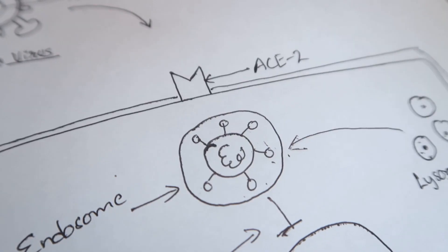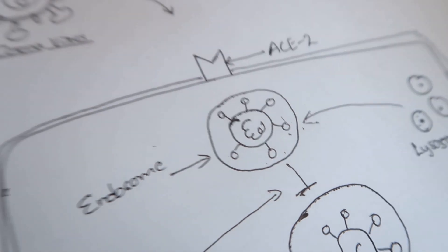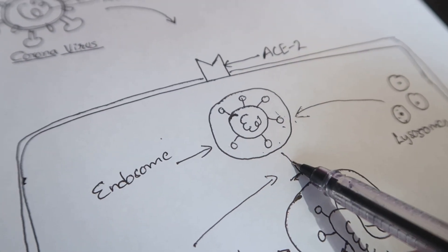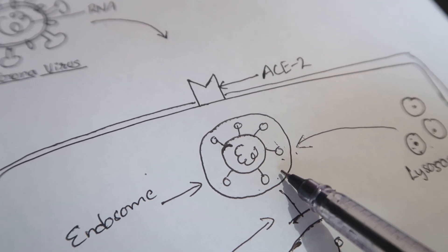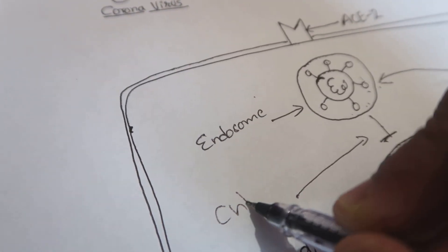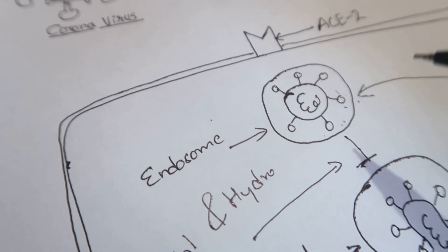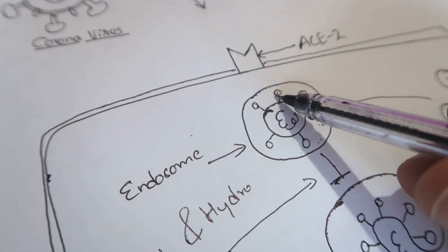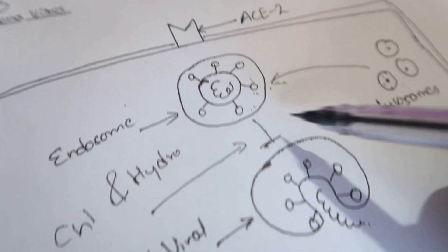Now the first mechanism of chloroquine and hydroxychloroquine is at this stage. The lysosomal enzymes require lower pH to work inside the endosome. The drugs, being weak bases, will increase the pH and won't allow these lysosomal enzymes to function, thus preventing the release of viral RNA inside the cytoplasm.